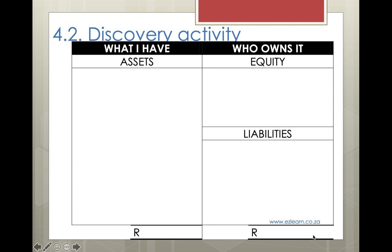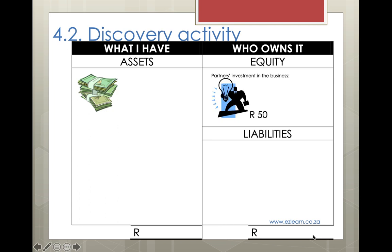Keep in mind that each icon for money represents 50 Rand. The first transaction: you decide you've got this brilliant business idea and together in your group you are able to put together about 50 Rand to start the business, so you put this in a little Tupperware. You've now got 50 Rand cash in your assets, and your investment in the business creates an account in equity for your capital of 50 Rand. You've got 50 in assets and 50 in equity, so they are equal.